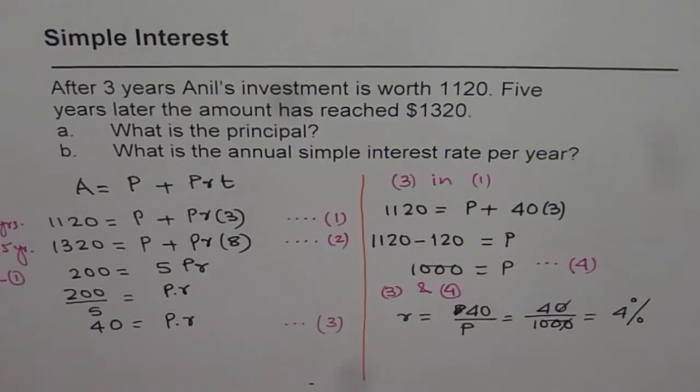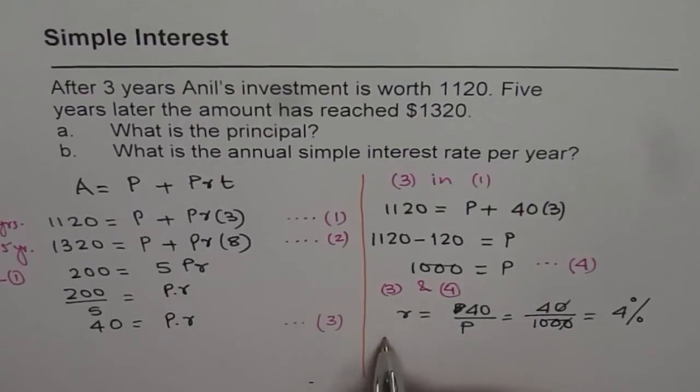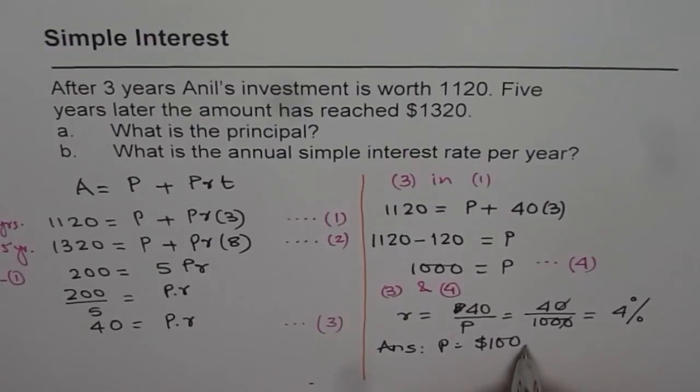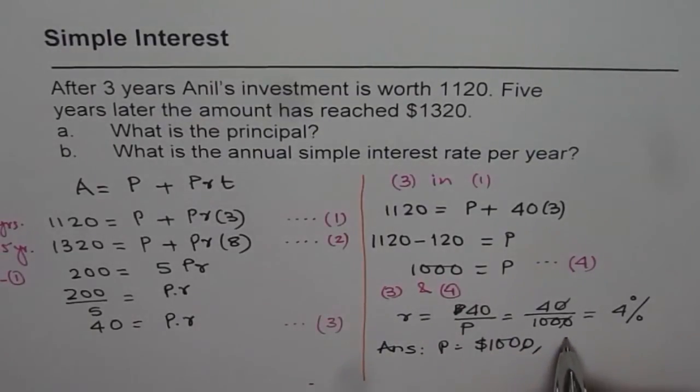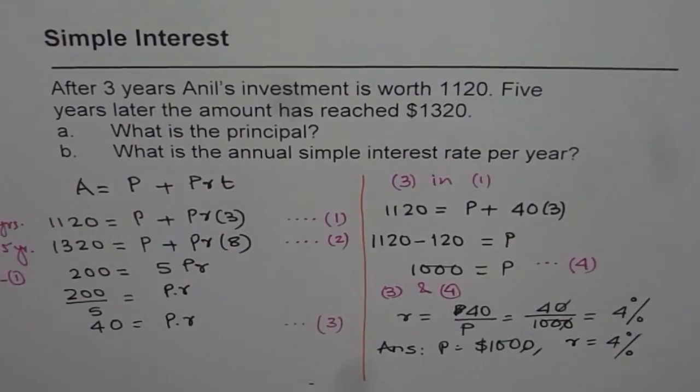So therefore, we can find both P and R utilizing the given information. So we get principal equals $1000, and the rate of interest as equal to 4 percent. I hope you appreciate the technique. This is a very important question. Go through it once again and try to understand how we got the result. Thank you.